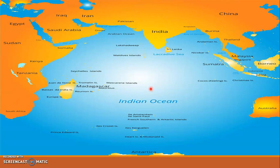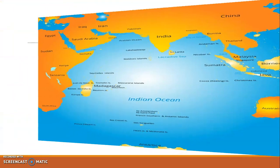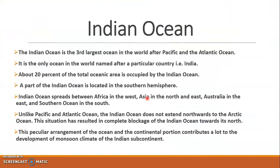The Indian Ocean is the third largest ocean in the world. The first largest is the Pacific Ocean, the second is the Atlantic Ocean, and the third is the Indian Ocean. It is the only ocean in the world named after a particular country, that is India.